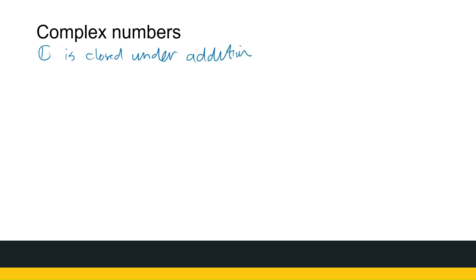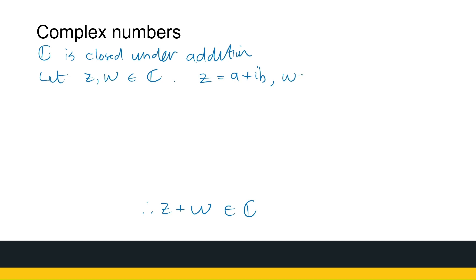What does closed under addition mean? It means if I've got two elements of C and I add them, the result is also a complex number. So if I take two complex numbers and add them, I again get a complex number. If I take two complex numbers, what would they look like? Z can be A plus iB, W can be X plus iY — you can use any letters, or A1, B1, A2, B2. They're just placeholders. A, B, X, and Y are all real numbers, and that's important to state because we're going to use properties of real numbers.